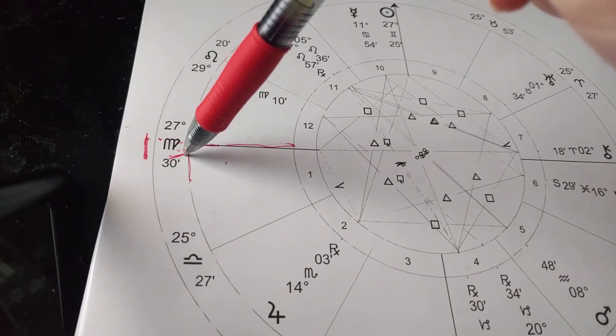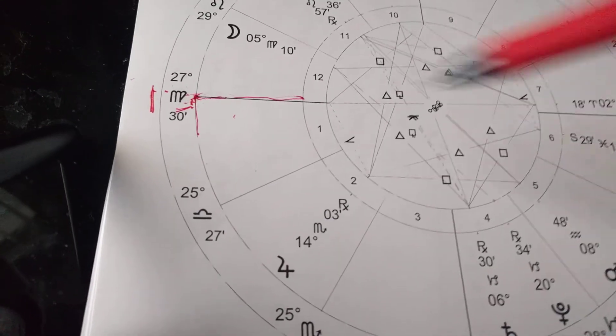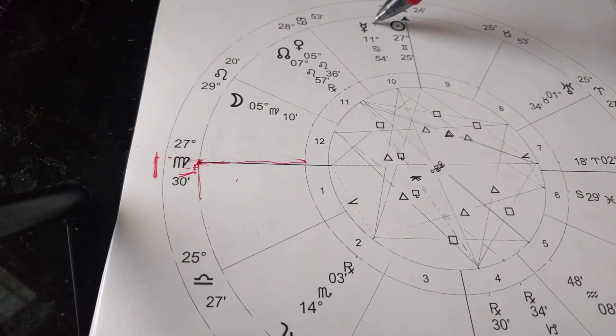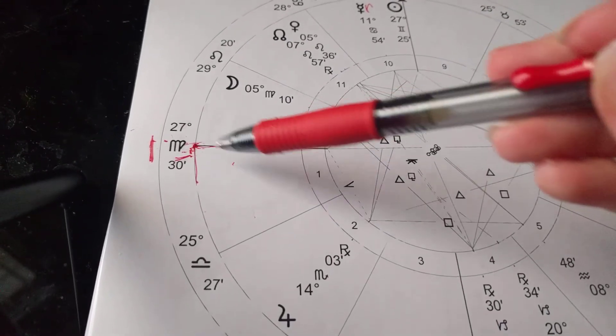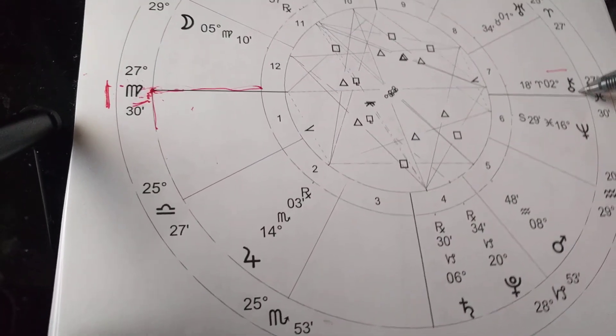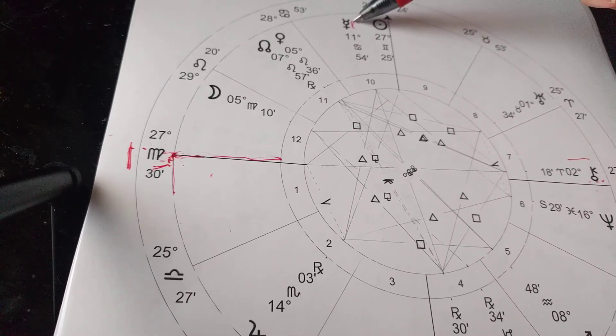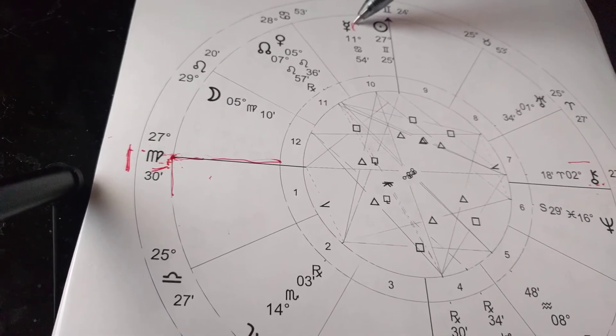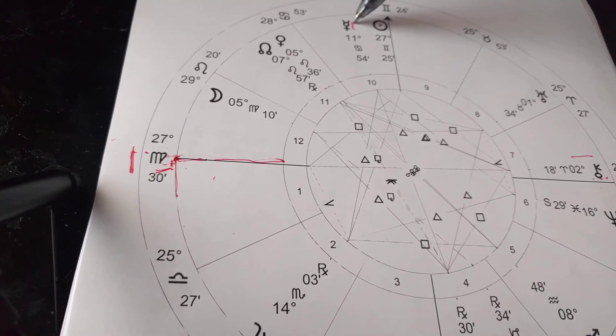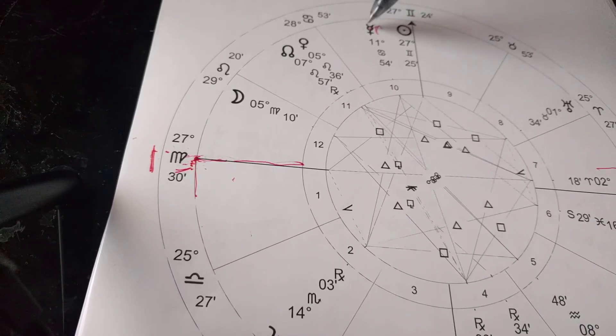So for Virgo rising, there are actually two planets that are related to Virgo. Now the traditional planet related to Virgo is Mercury. But the newer planet that's associated with Virgo is Chiron, which right here looks like the key. Chiron is associated with healing and Mercury is associated with the mind and thoughts and the purpose of thoughts, and how we use our daily habits to improve the world, what we do on a daily basis to take care of oneself.